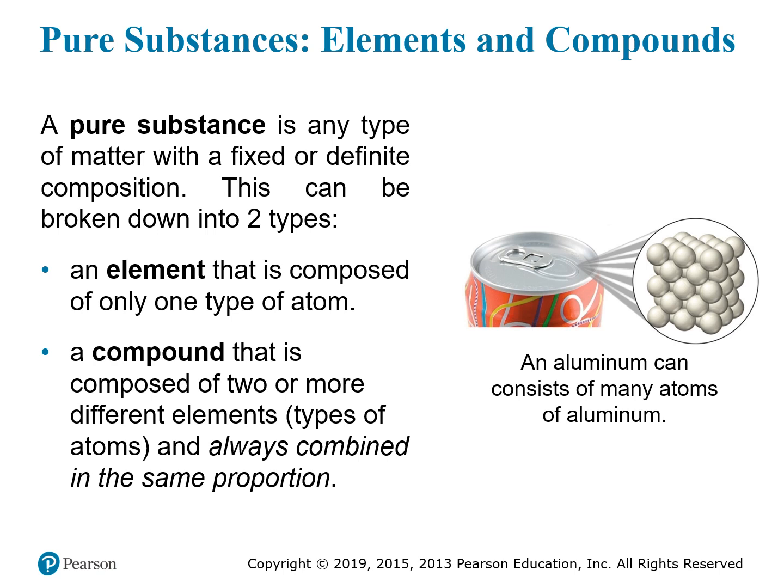The easiest way to understand this difference is to look at some examples. A pure substance falls into two categories. The first, and probably easiest to understand, is an element — something you see on the periodic table, which we'll get to later. All of the atoms of an element are exactly the same. Things like gold, copper, hydrogen, oxygen, and aluminum are all elements. The picture here shows a sample of an aluminum can — all of the atoms that make up that can are aluminum atoms, so it is a pure substance and specifically an element.